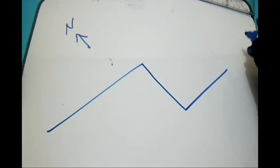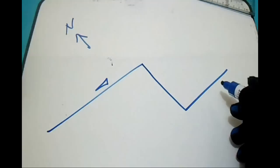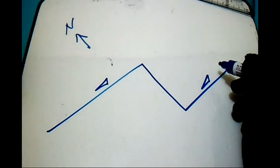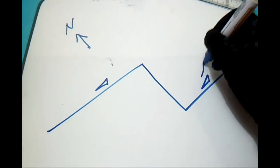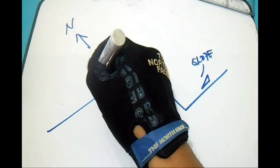If you see the triangle like this, we have triangles like this. This is the slope, and this is the slope.